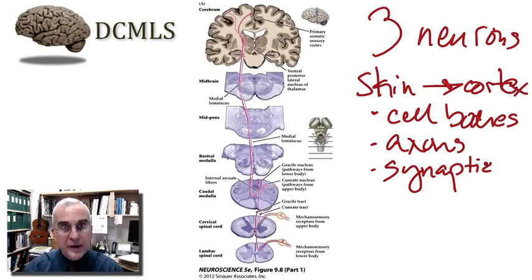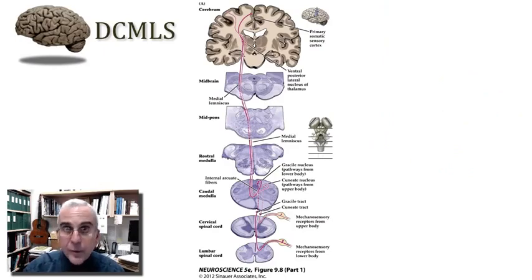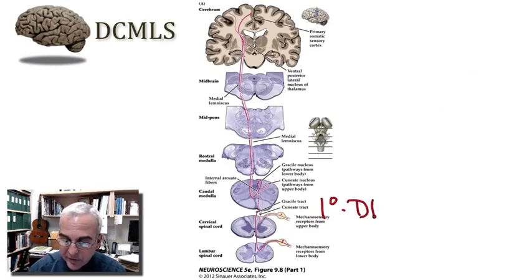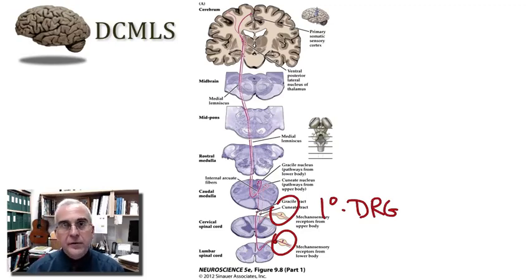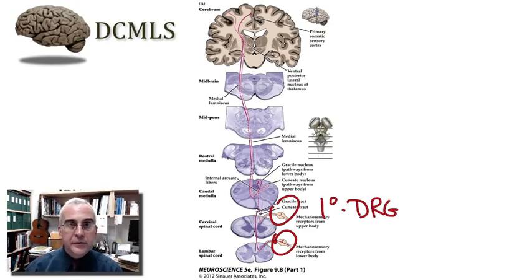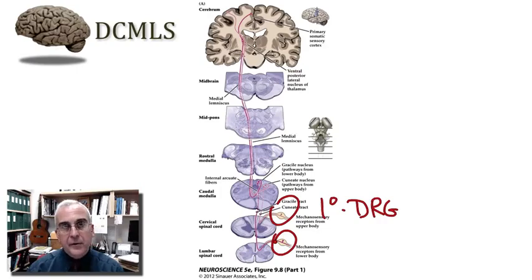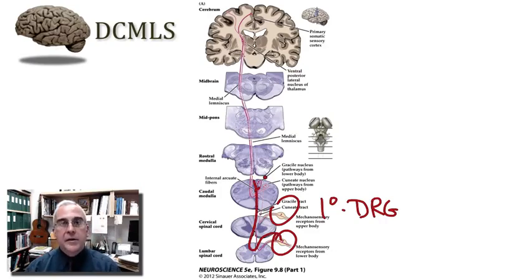Let's keep those thoughts in mind as we look at this pathway in detail. This pathway begins with a first-order neuron, which is a dorsal root ganglion neuron — here in the cervical enlargement and in the lumbar enlargement of the spinal cord. These are the first-order neurons. They have a peripheral process specialized to establish some labeled line for a particular aspect of mechanosensation, and then the central process enters the spinal cord.